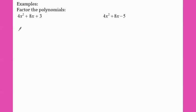So factor out the GCF if possible. Four, eight, and three don't have anything that divides into all of them, and not all the terms have an x, so we don't have a GCF here. So we're going to take a and c and multiply them together: four times three equals twelve.